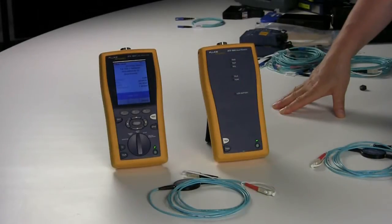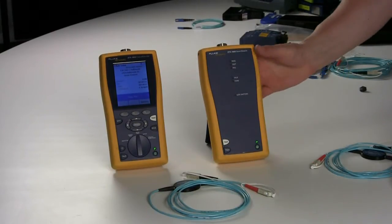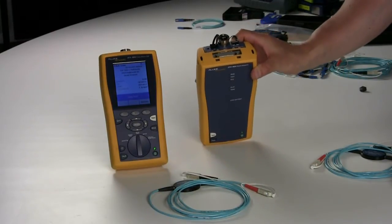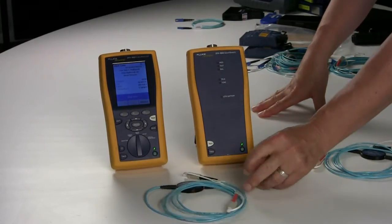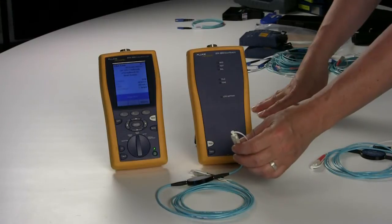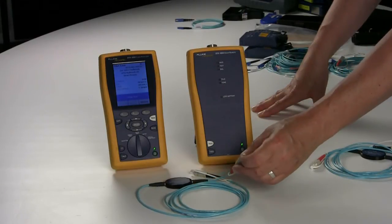Before testing or setting your reference, you need to ensure that your equipment is clean. You can inspect the SC adapters on the Fluke DTX utilizing the video probe and you can inspect the end faces of the test cords with the handheld SC scope.